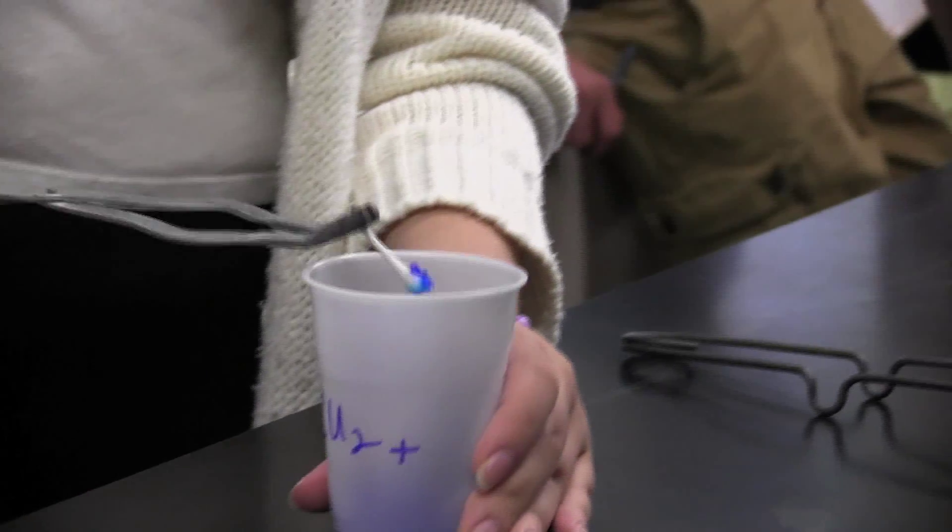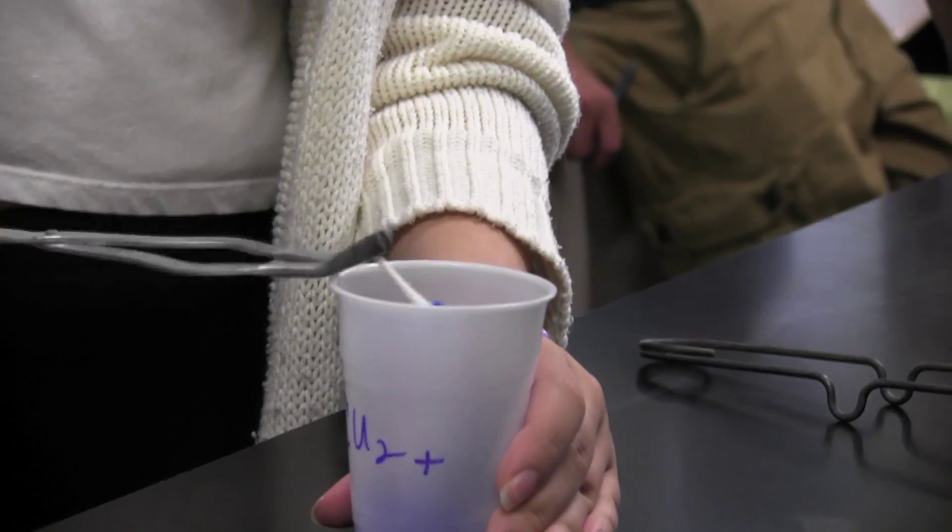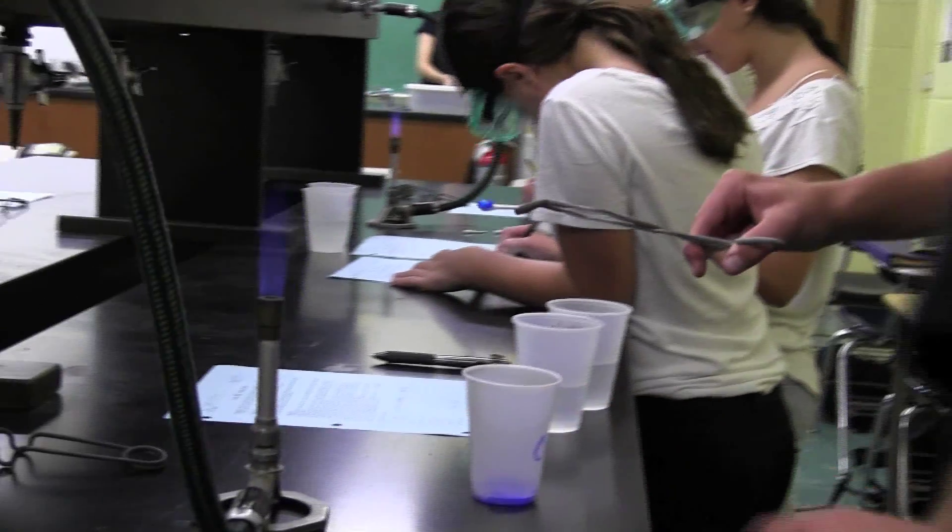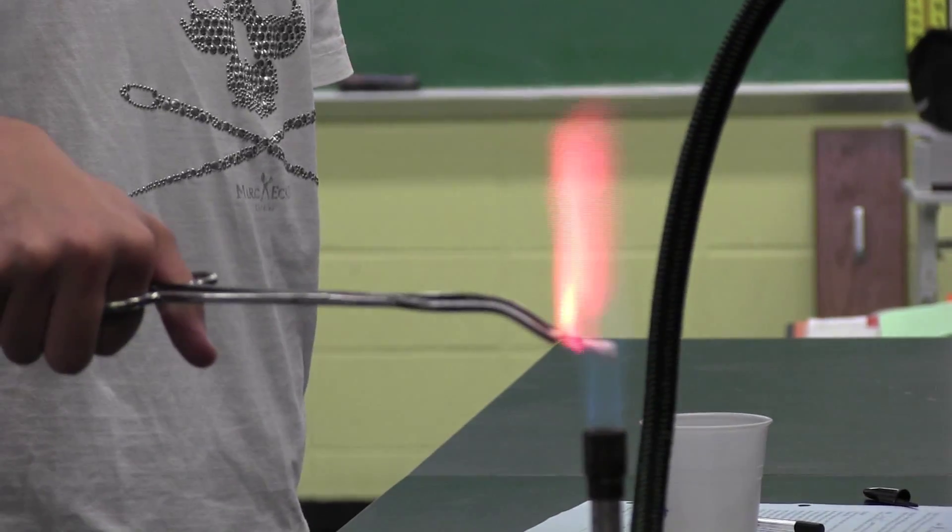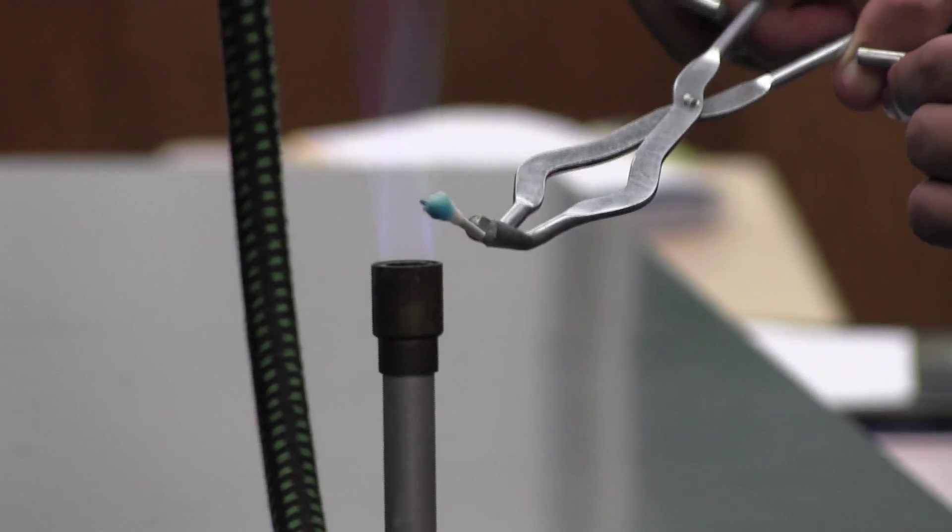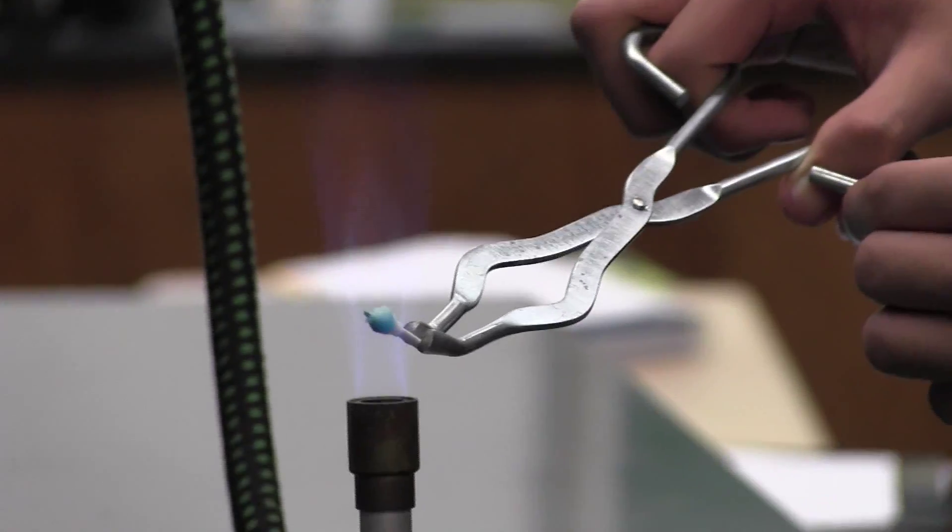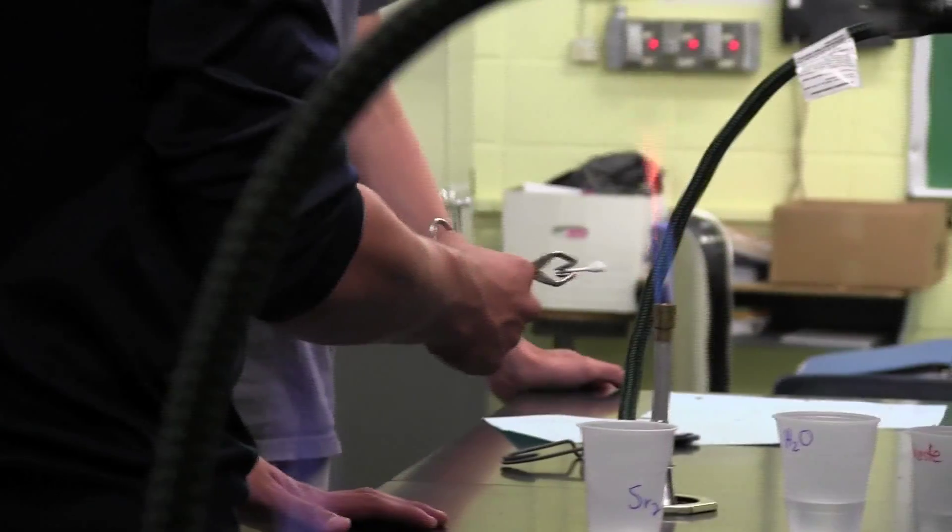You're going to dip it in your cup of chemicals. And then I want you to tap it off so the extra clumps fall off, all right? And then you're going to put the Q-tip in the Bunsen burner flame. These are obviously flammable Q-tips. They're made of cotton and paper. Please don't leave the Q-tip in there so long that you're burning the Q-tip, okay?